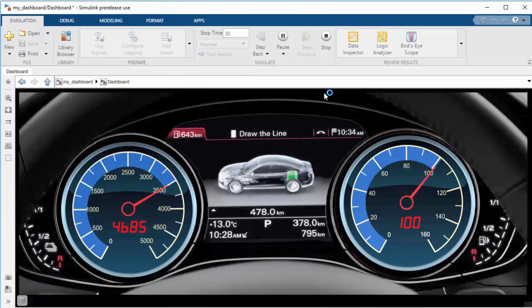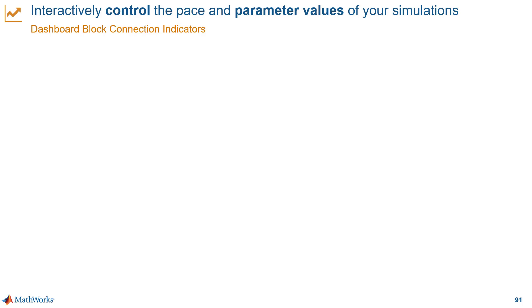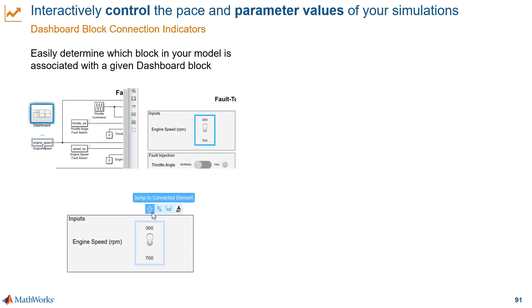This is a really neat way to give your models stunning displays and interactivity. If you're working with a lot of these dashboard blocks, there are connection indicators to always help you find what model element your dashboard is connected to. You can click on a dashboard block to highlight the connected block or signal, and vice versa.